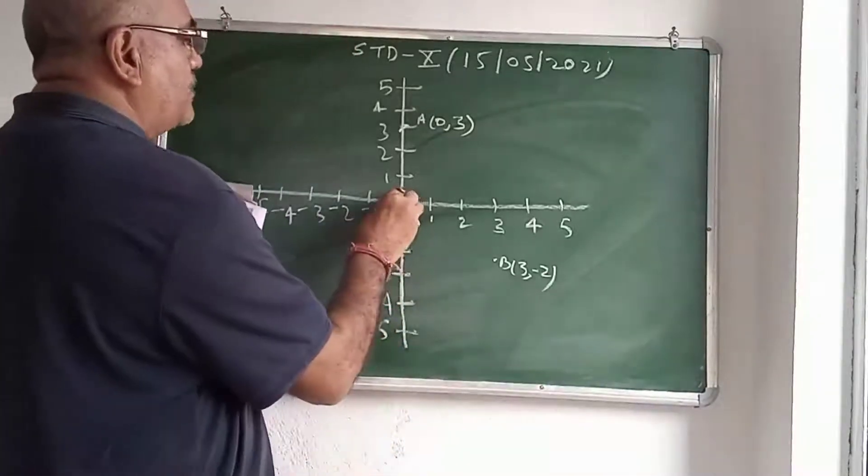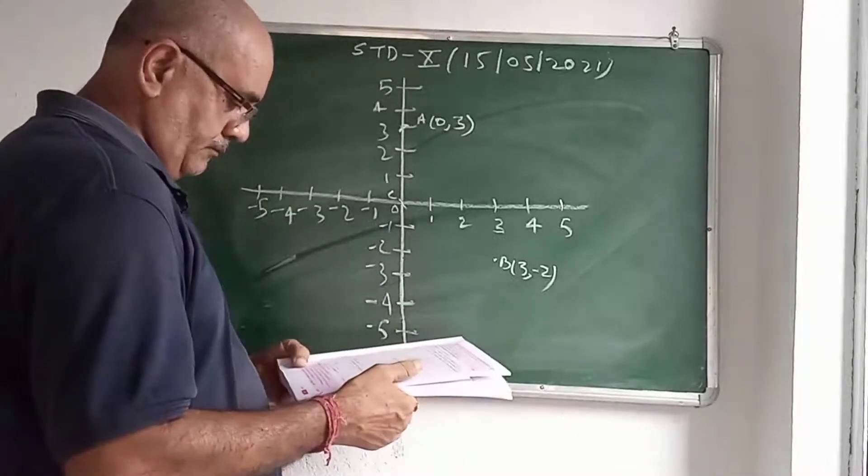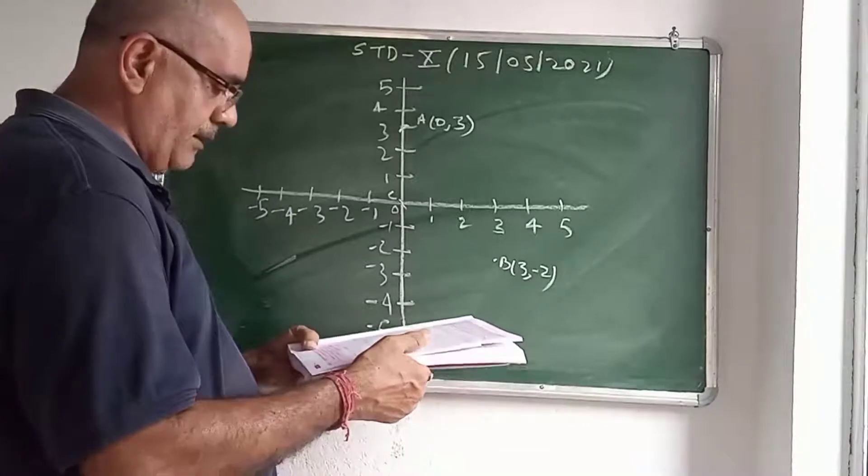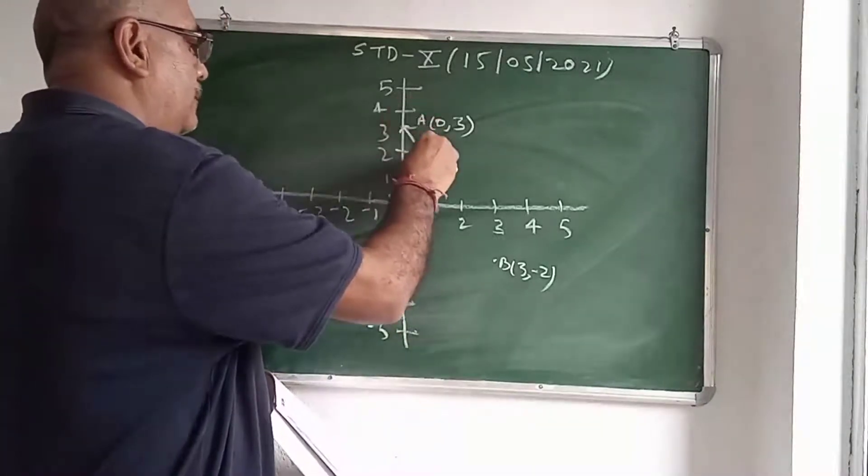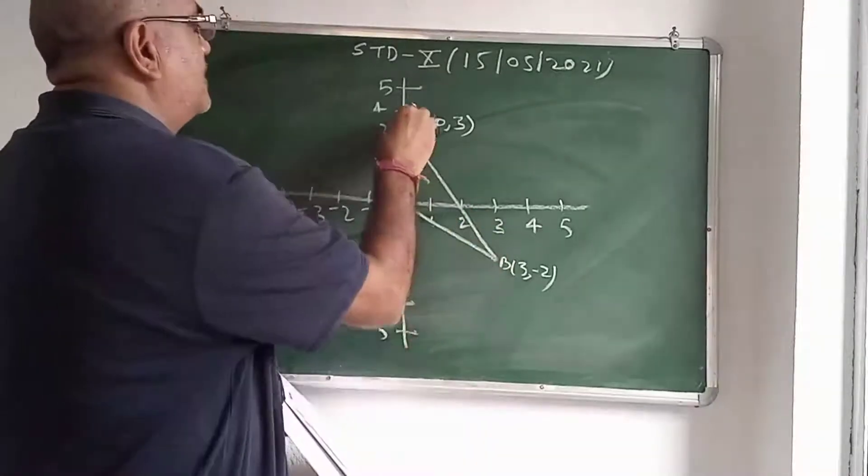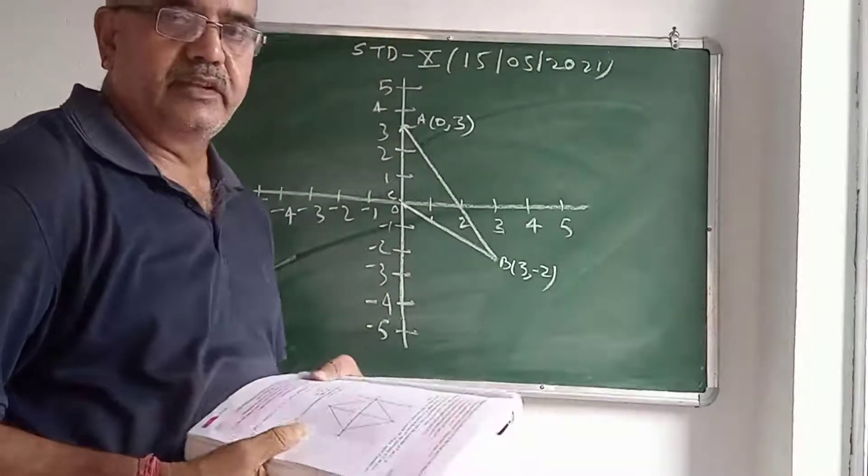C(0,0) means origin. This is C. Or the vertices of a triangle ABC. Join it. ABC is a triangle. Is it?